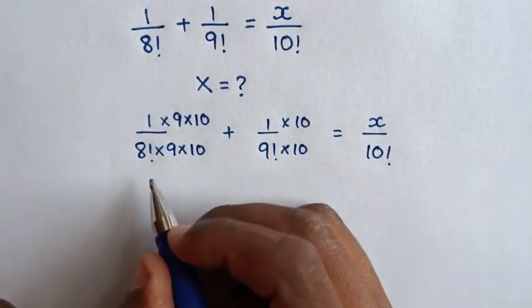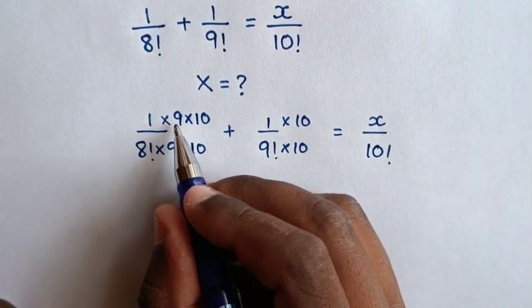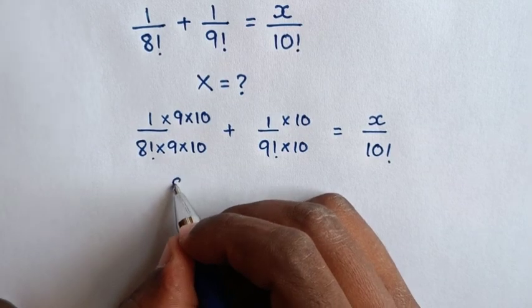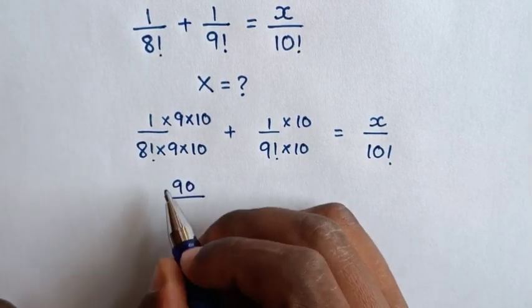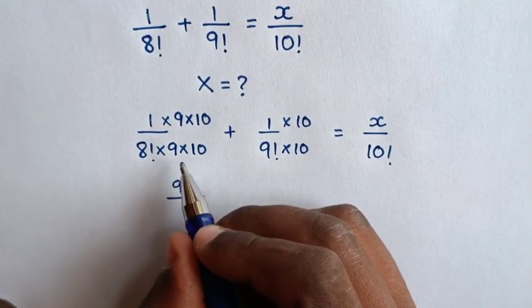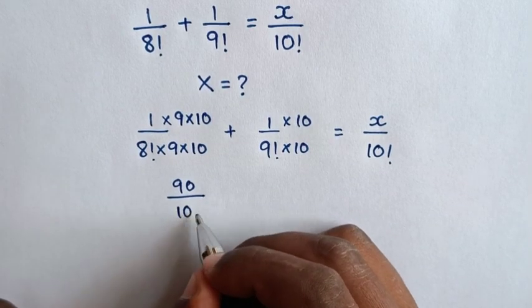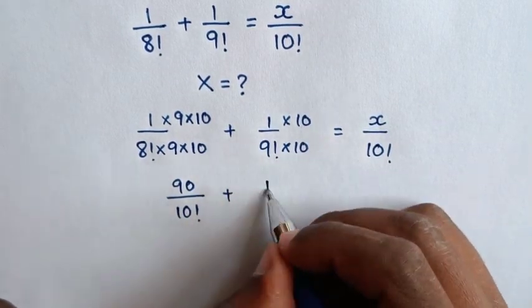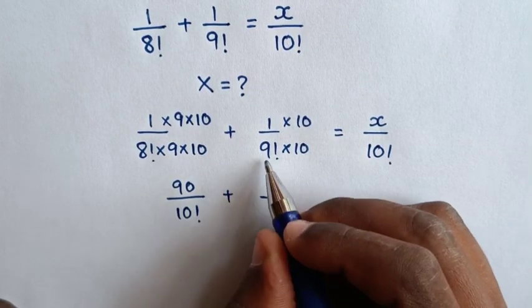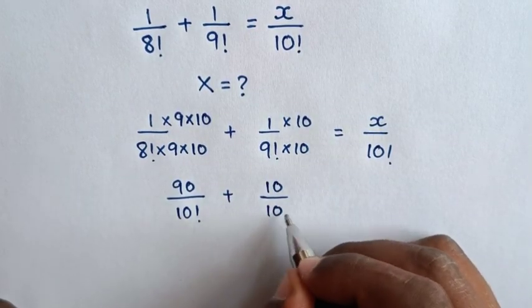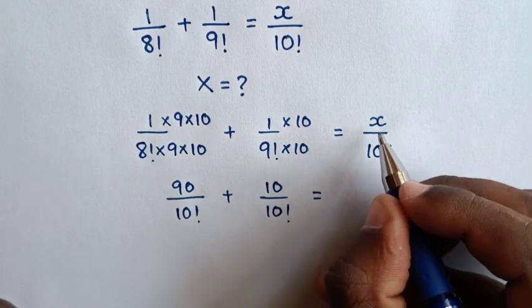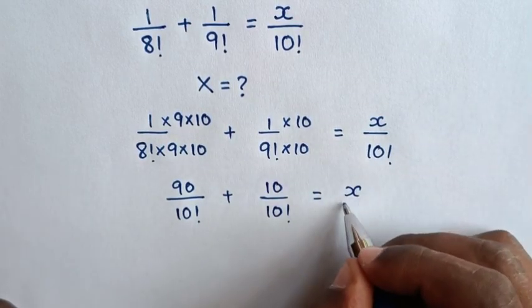Then our equation will be 9 times 10 is 90 over 10 factorial, plus 10 over 10 factorial, is equal to x over 10 factorial.